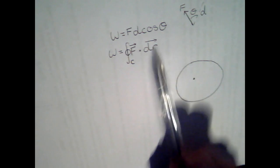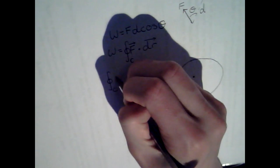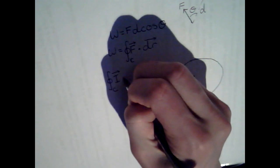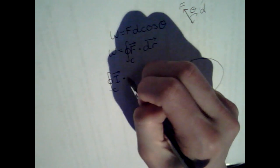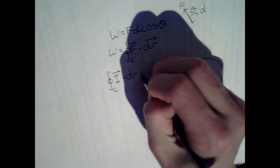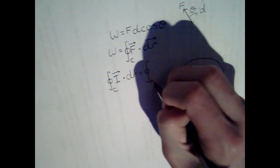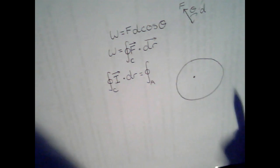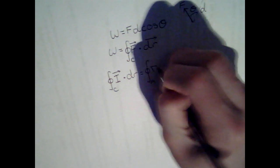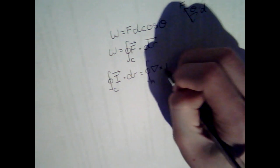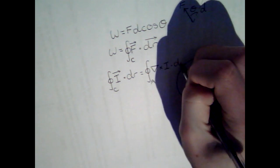Now that it's in this form, we can take advantage of something called the Kelvin Stokes Theorem. The Kelvin Stokes Theorem basically says the closed curve integral of i, which could be anything, dot dr equals, now, this is a different type of integral. This is a surface integral, over a closed surface, of the curl of i, which is just del cross i, dot d a.